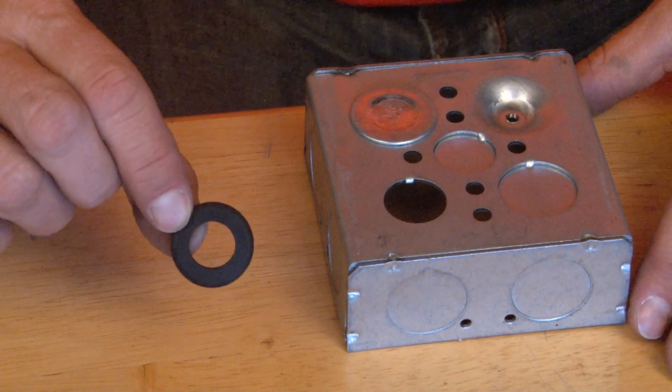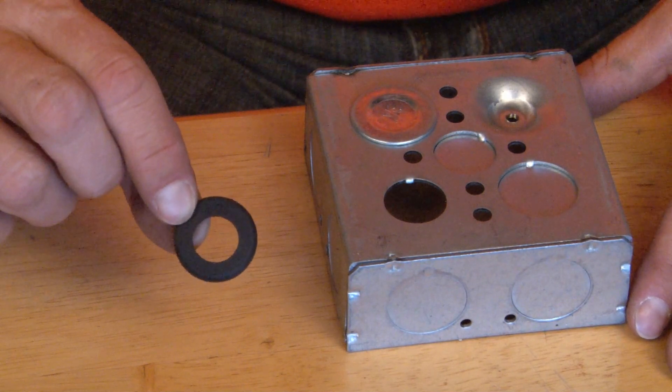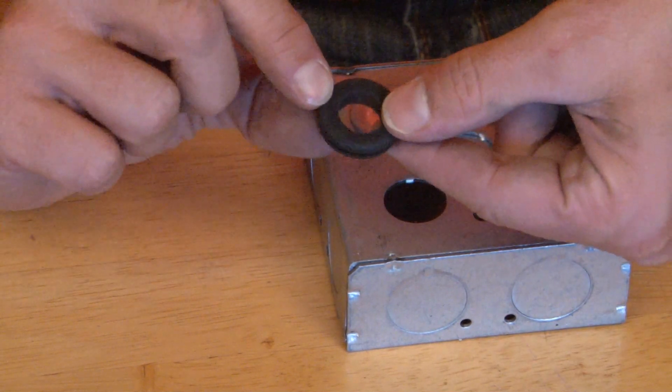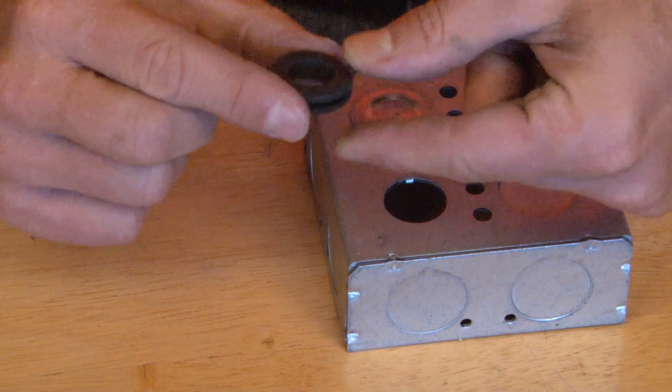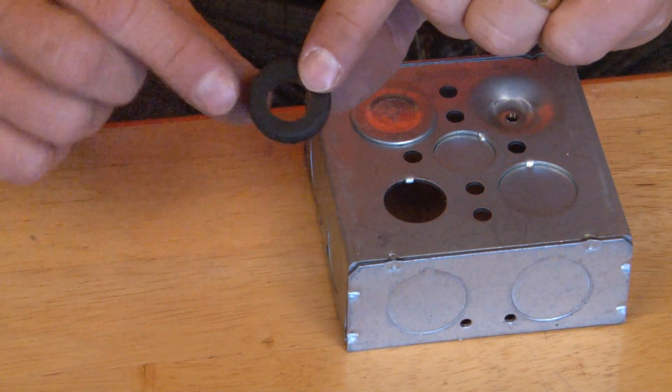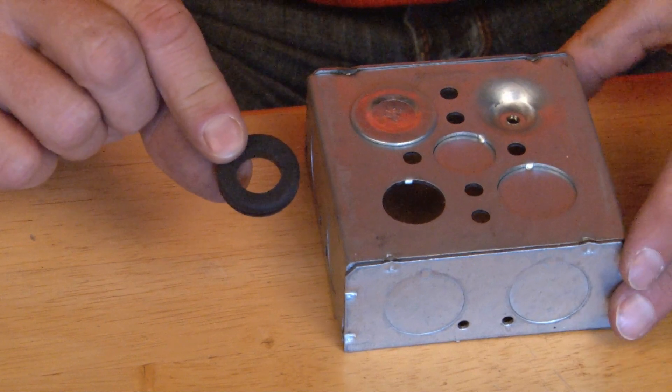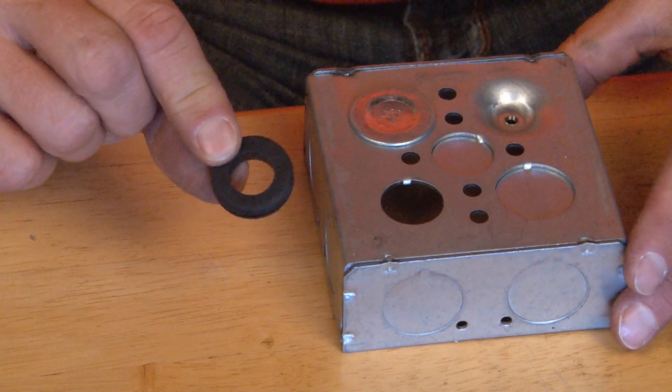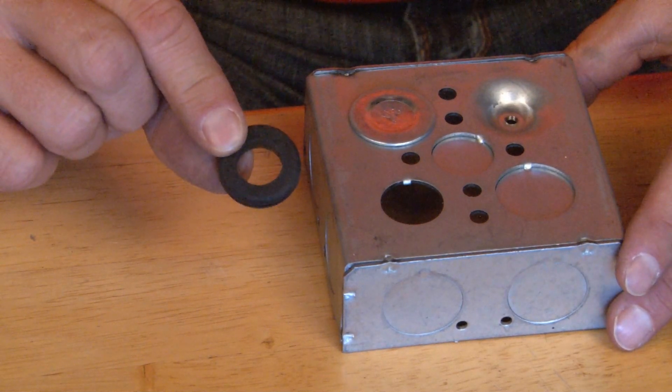KOBR50 is a half-inch knockout insulating bushing made from very pliable rubber. Anytime you need an added level of protection for the wires that are going to be coming out of the electrical box, it may be important to use a rubber bushing.